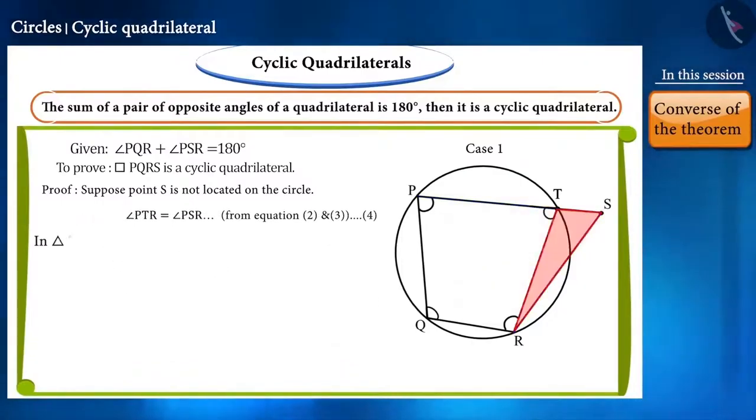Now, observe triangle TSR. Angle PTR is its external angle, which will be equal to the sum of angles TSR and TRS.